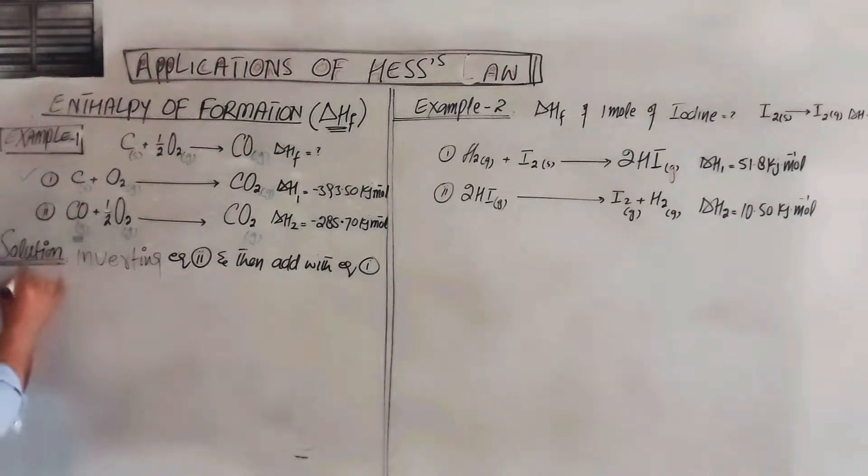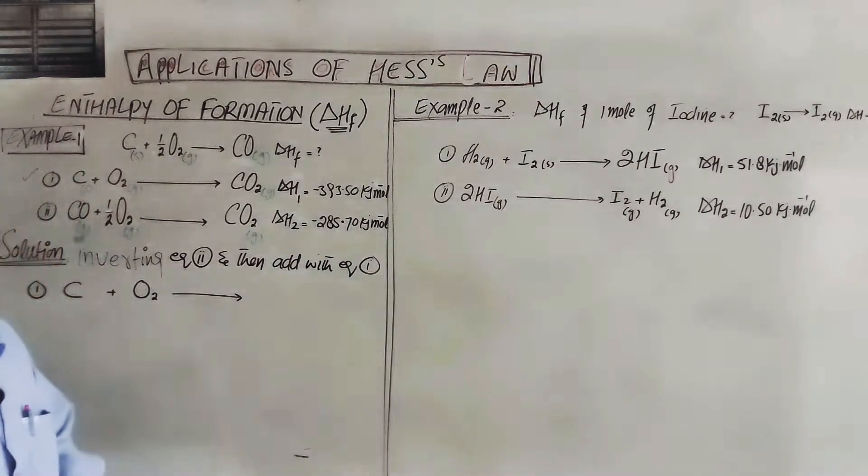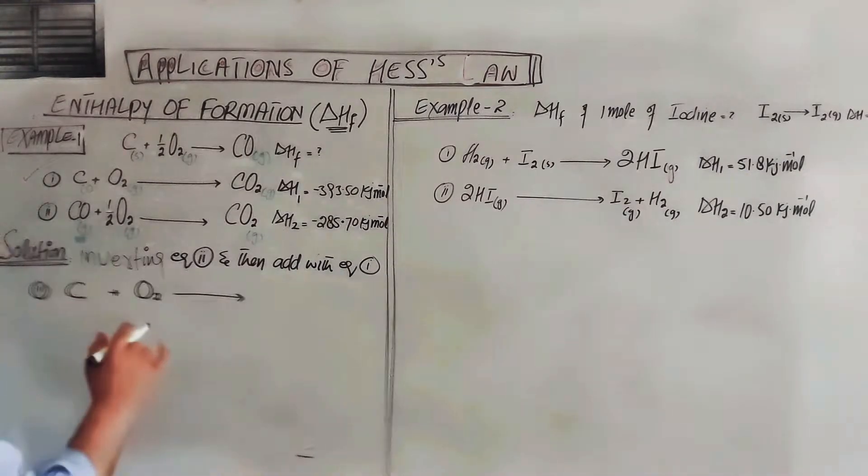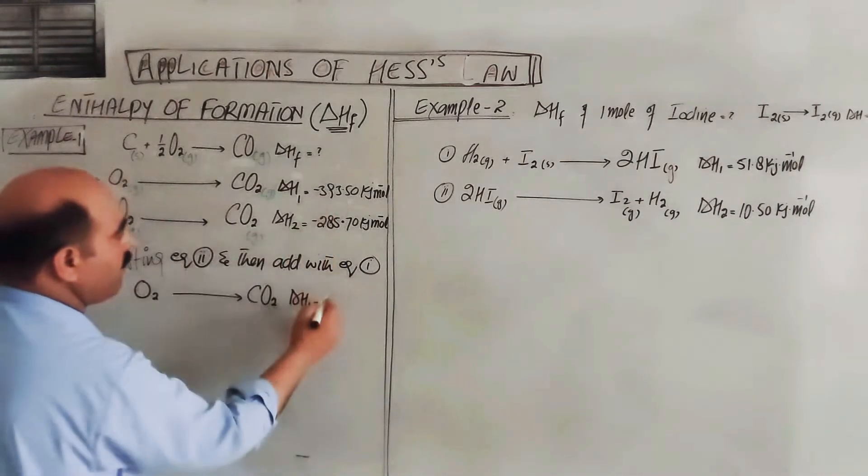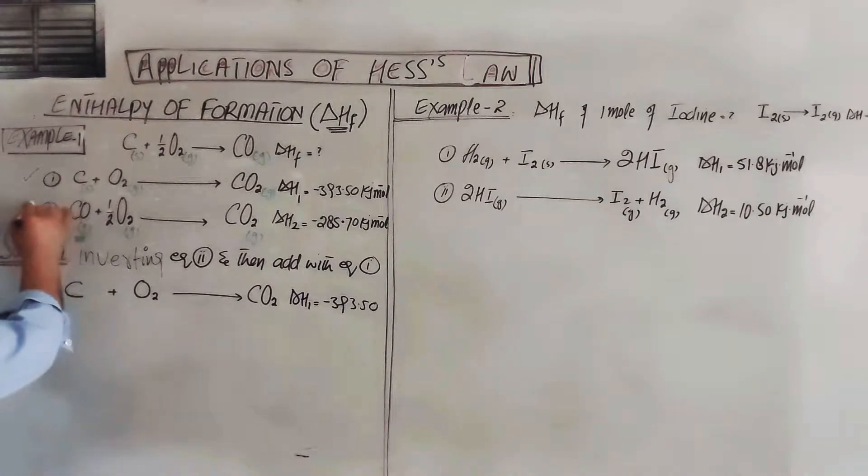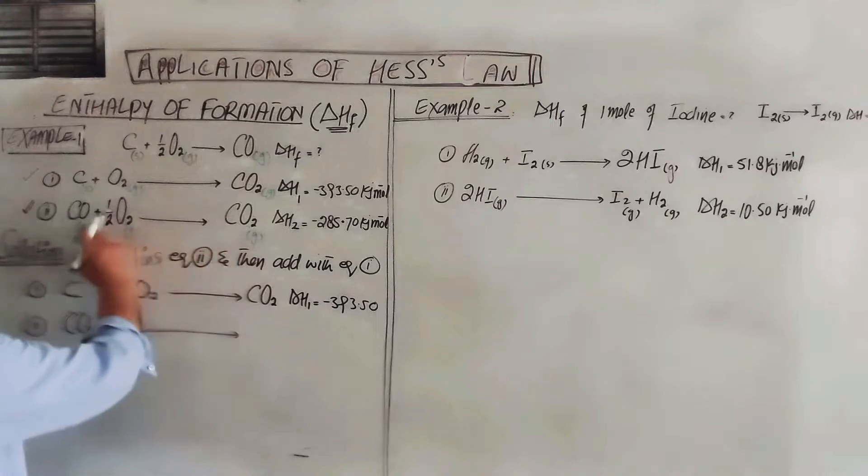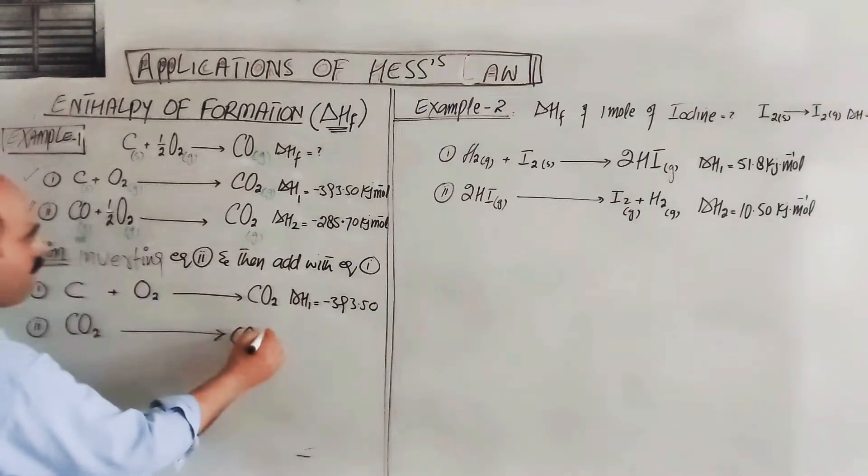Equation one: carbon in solid state plus oxygen in gaseous state - physical states are already there, there must be physical states because enthalpy change depends on physical state - gives carbon dioxide. Delta H1 is minus 393.50 kilojoules per mole. The most important one, the most important one, focus here.